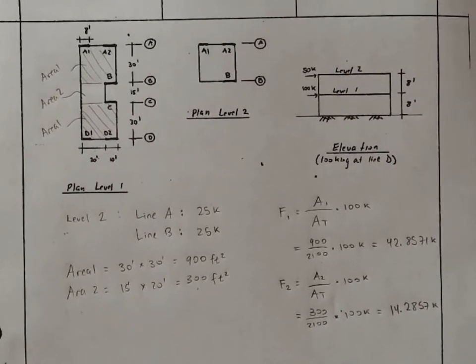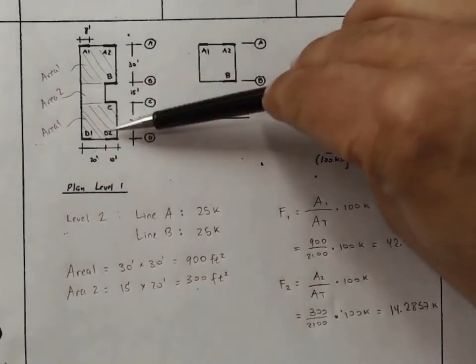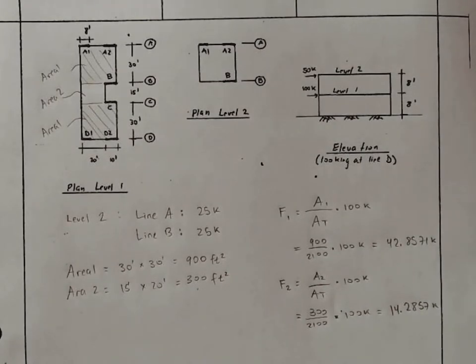You can check that this is correct, or at least that it's consistent, if we multiply this times 2, again because there's two areas, add it to this force here, we'll see that it adds up to the full 100 kips.